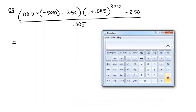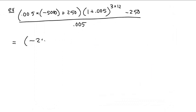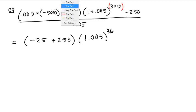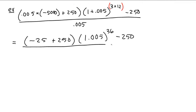So this is negative 25 plus 250, 1.005, that's not too hard, 1 plus .005 is 1.005, 3 times 12 is 36, remember these invisible parentheses. You have to evaluate that first. And then we have minus 250 all over .005.